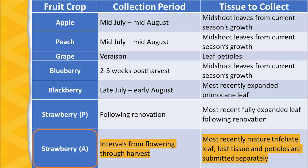In the case of annual strawberries, most sampling takes place in the spring from flowering through harvest. Frequently, multiple samples are collected and these include the most recently mature trifoliate leaf. Frequently the leaf tissue and the petioles are separated, submitted separately, and analyzed separately.